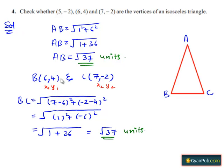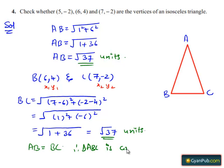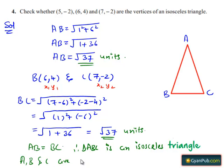It is clearly seen that the length of AB equals the length of BC. That is, the sides AB and BC of triangle ABC are equal in length. Therefore, triangle ABC is an isosceles triangle. Hence, we can say that the points A, B, and C are the vertices of an isosceles triangle.